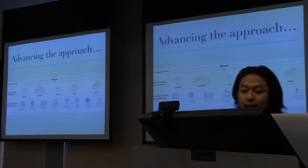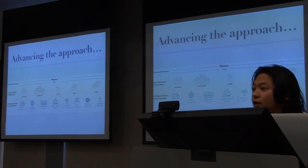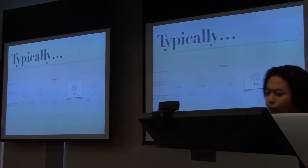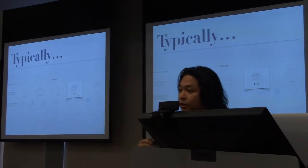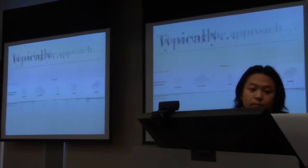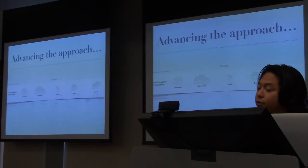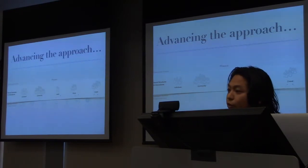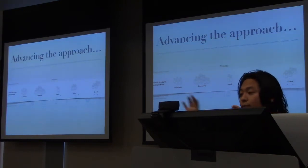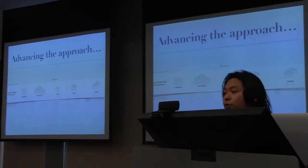When we design socio-technical systems, we typically consider the context of the larger system. In practice, solutions are often designed component by component or layer by layer — for example, supporting group collaboration and building technologies for collaboration within a group, or designing technologies for coordinating crowds. Whereas with the computational ecosystems approach, we're trying to understand how to bring in multiple structures of people and interactions that can come together to jointly solve a problem, and to explore the synergies that arise when these component interactions inform one another to enable new kinds of solutions.